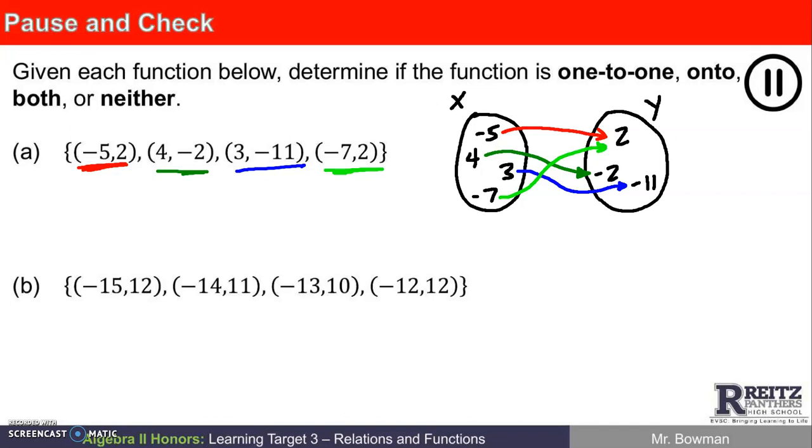Let's make a decision. Is this 1 to 1, onto, both, or neither? Is it 1 to 1? Does every element of the range hook up with only one element in the y? No. When y is 2, this guy here goes with both negative 5 and with negative 7. So this one is not 1 to 1. I found a y value that hooks up with 2 x's. Is it onto? Is everything in the range hooked up? Yeah. I would say it's onto. So the best answer would be to say that onto is the only description that works here.